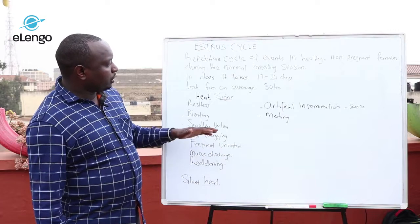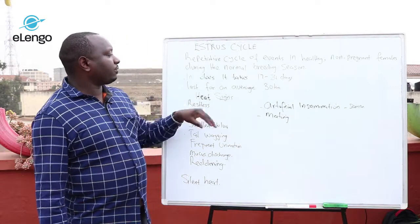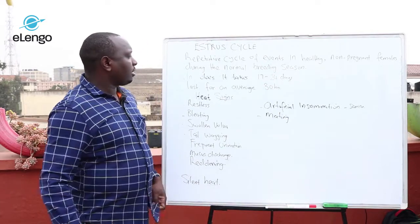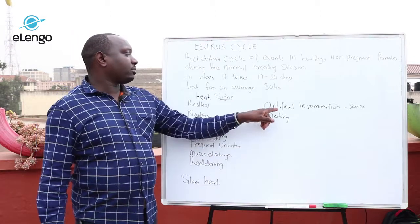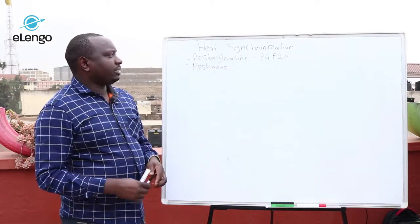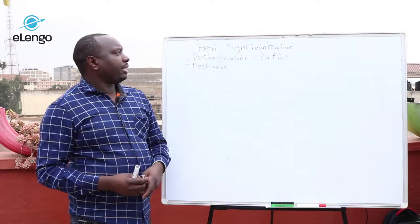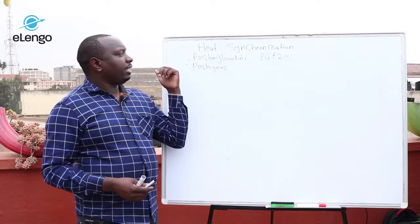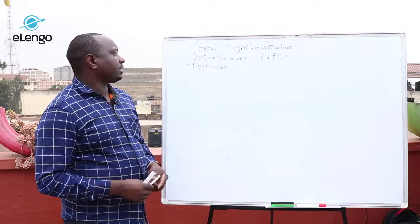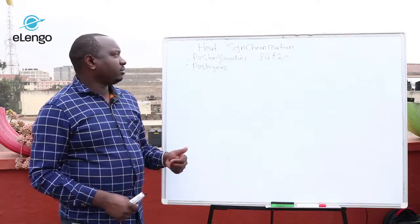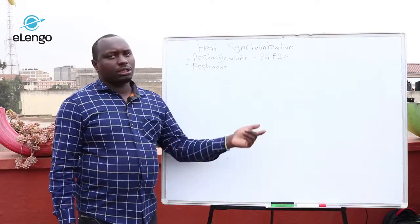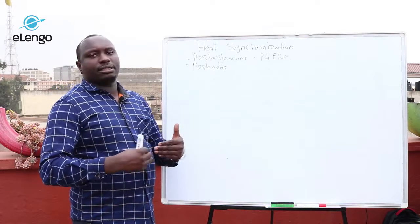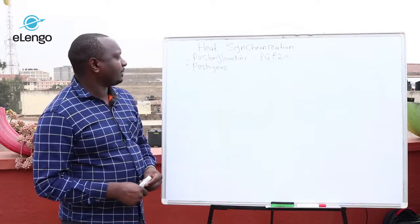If the doe did not get pregnant during mating or insemination, the farmer has to wait 17 to 24 days to see the same signs again before attempting another service. Heat synchronization is done to induce the doe to come on heat. This process is commonly available and cheap for every farmer. The reason we do heat synchronization is because we want to increase production by having many does give birth at the same time for business purposes.